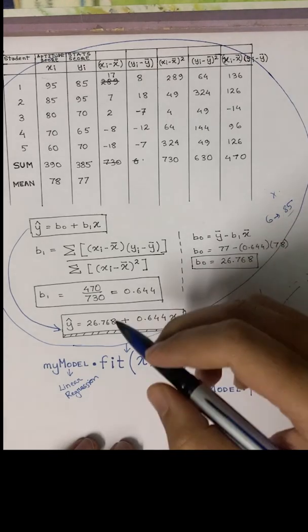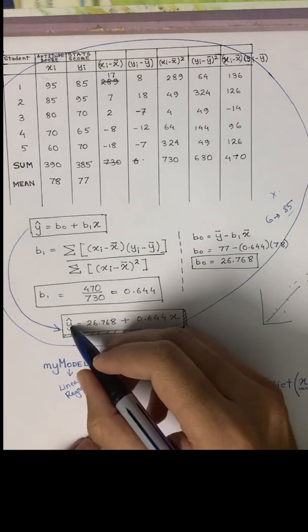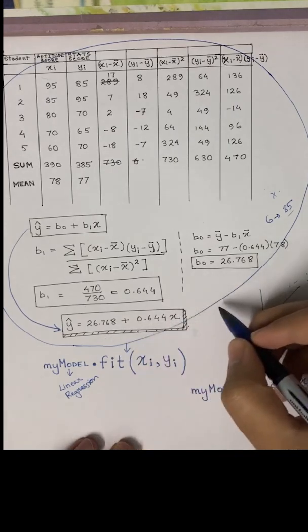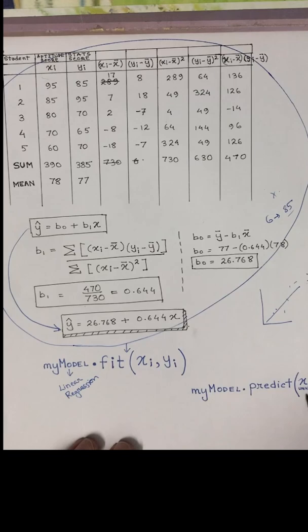To do this whole thing I just mentioned, we need the predict function. Here we give an unknown value for x. If we put 85 here, we will get the respective y value, which we can calculate by putting 85 in the equation. Now imagine x being a large number of values - x unknown could be an array of variables. If you need to predict 100 unknown variables, x would be an array of the unknowns.